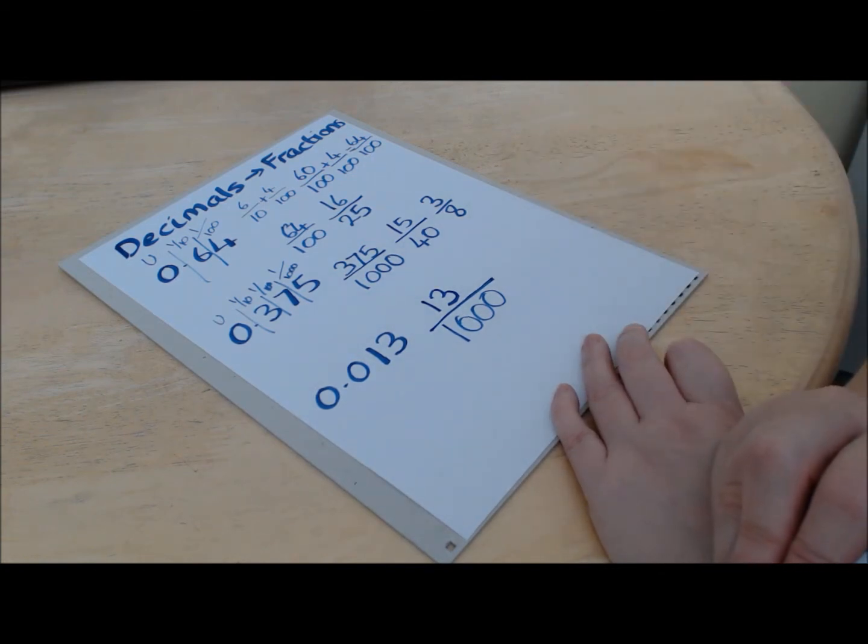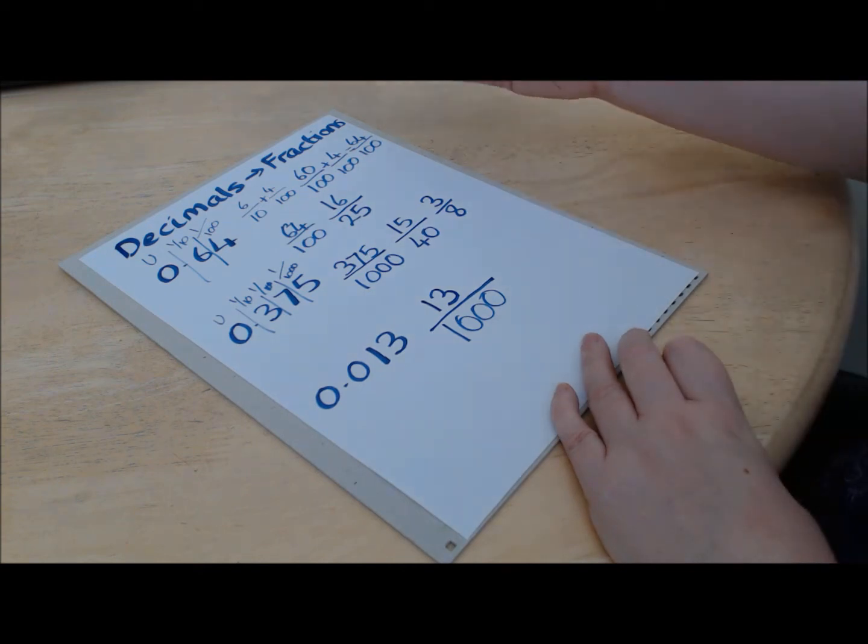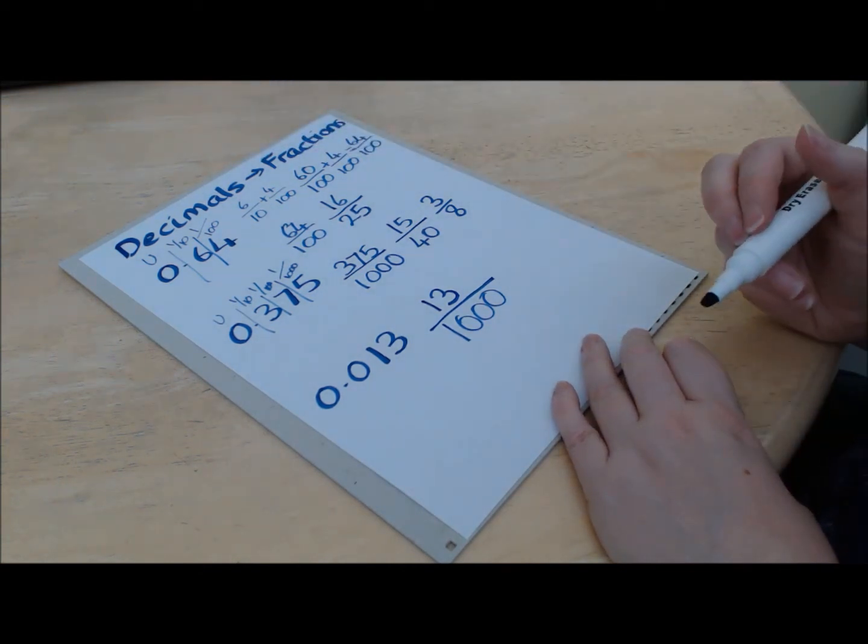In this particular case, we can't because thirteen is a prime number. So that's how you take decimals and turn them into fractions.